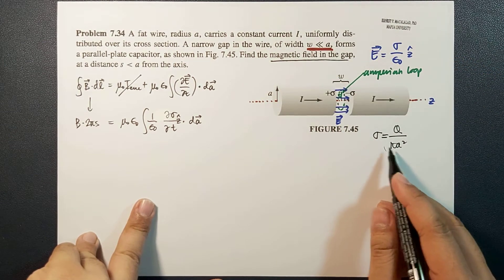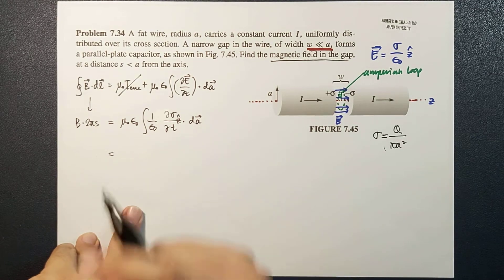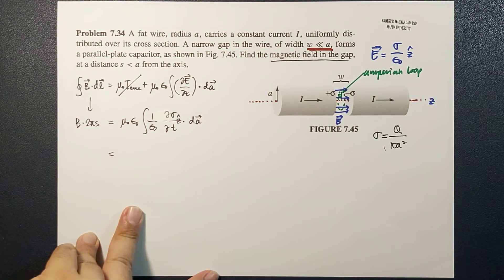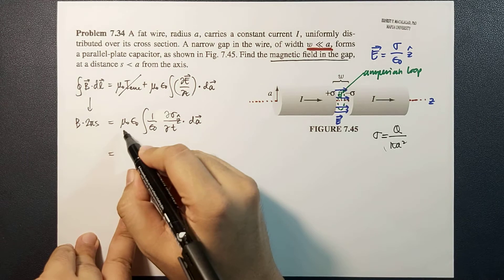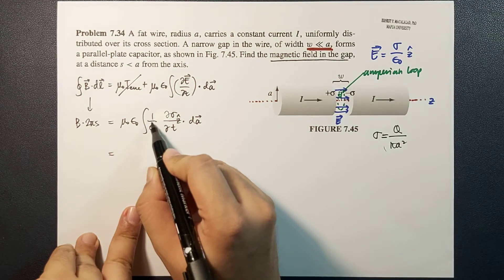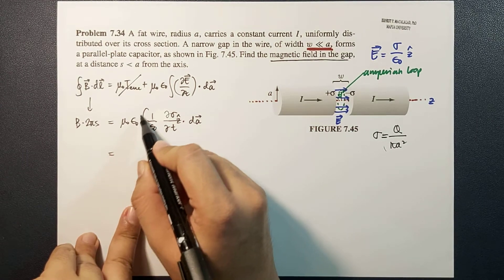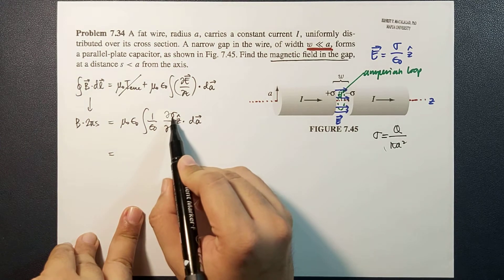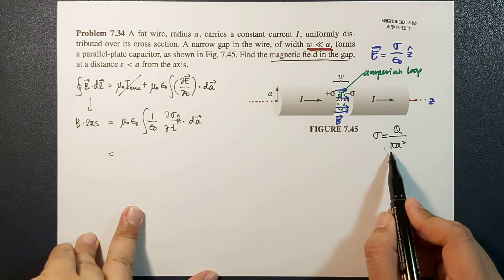Okay, so using this equation, we now have mu naught epsilon naught, and then epsilon naught will be brought outside, so that will cancel. And then this sigma will be q over pi A squared. So 1 over pi A squared will also be brought outside the integral.